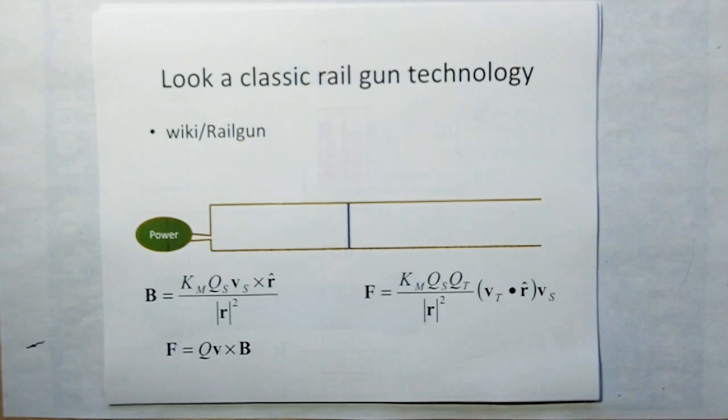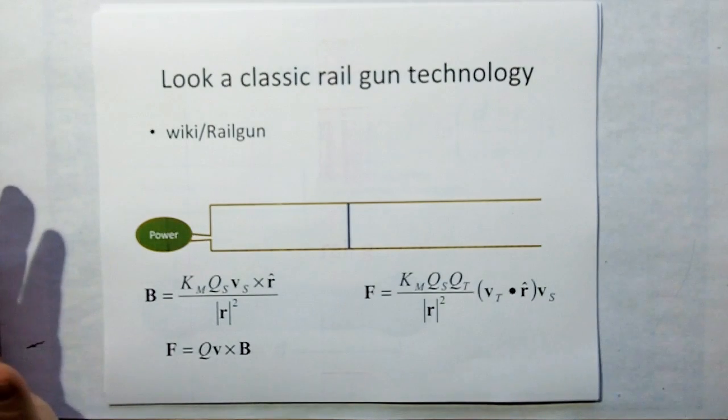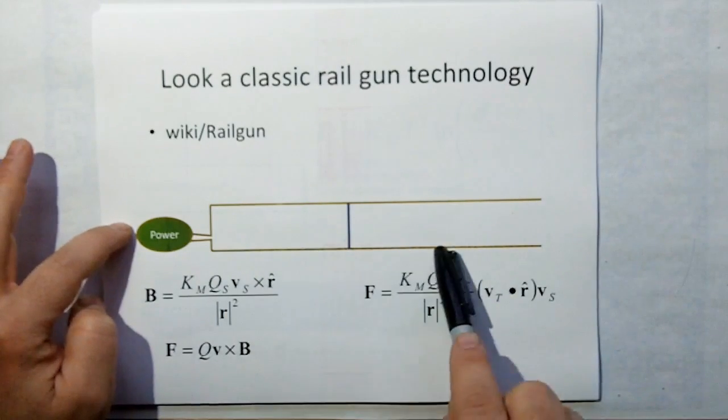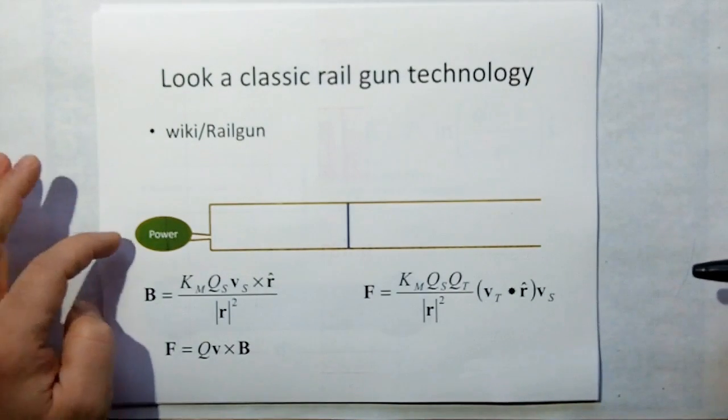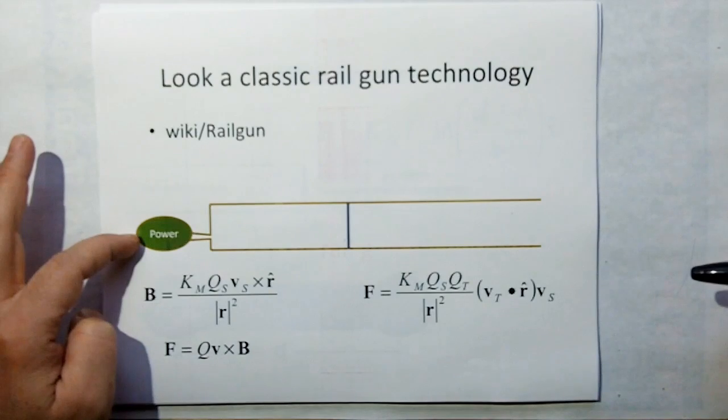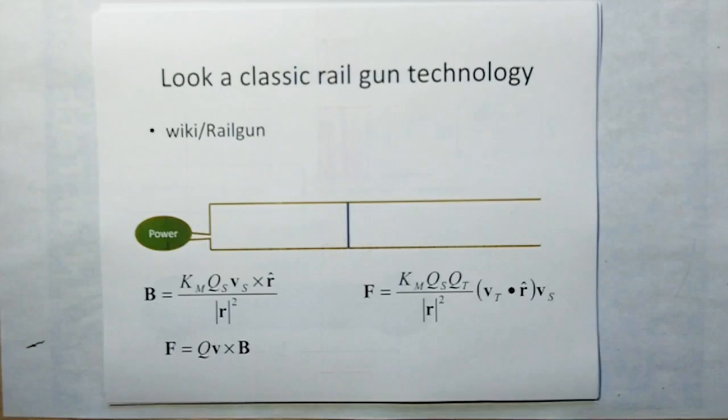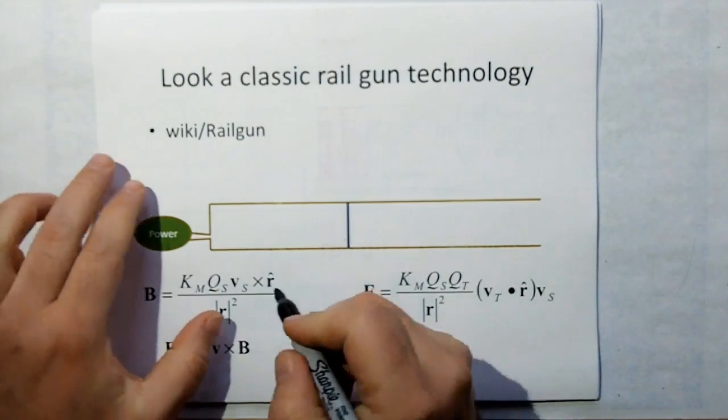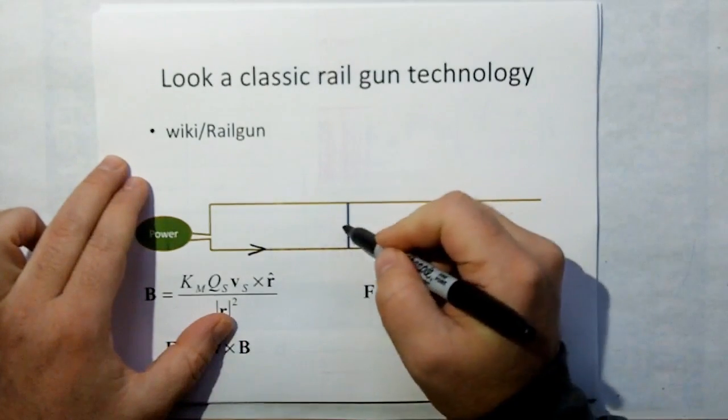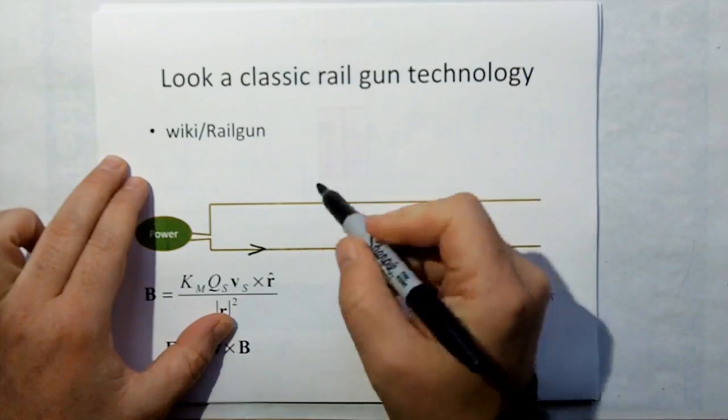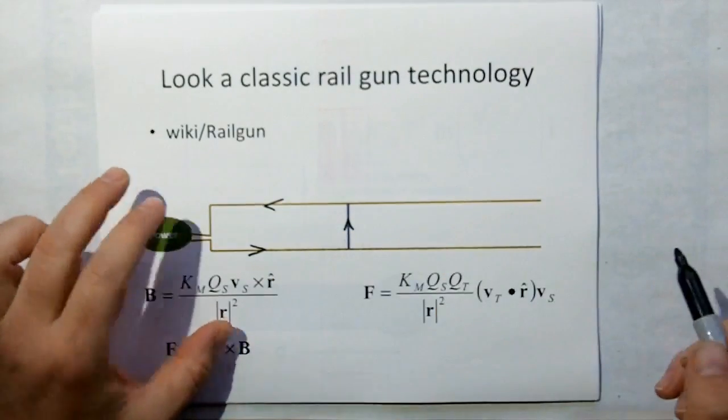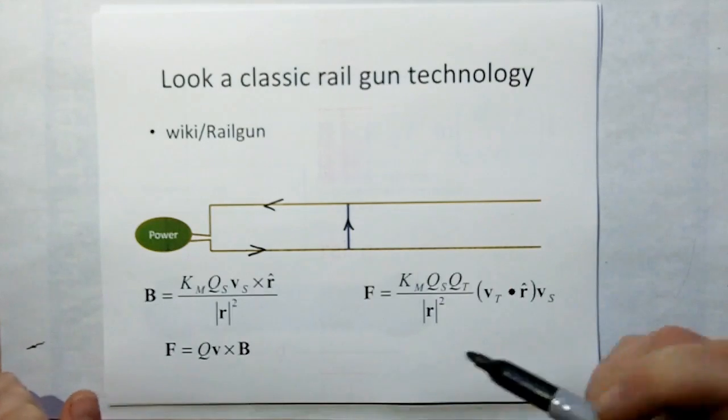So if we look at classic railgun technology, and you can go to Wiki Railgun. What I'm showing you has been around for ages. What you essentially have is two conductive rails, let's say copper or something, fed at the end by a power supply, and then you have the armature or the projectile. And what happens is, by forcing current into this rail, it's going to short-circuit through the armature and come back to this rail to the power supply. And that's the circuit that gets formed.